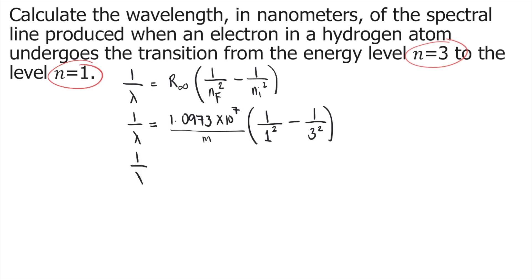So 1/λ—if you solve this in your calculator: 1.0973 × 10⁷ × (1/1² - 1/3²), you will get